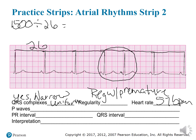Do we have any P waves? Yes, we do. There's a P here, a P there, a P here, a P there — yes, we have P waves. And for every P there is a QRS, so they are married to a QRS.